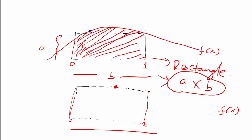Let's understand the theory behind it — it's very simple. There is a function f(x) and we want to integrate it between values 0 and 1, where 0 is the lower limit and 1 is the upper limit. We know that the integration of a function between two values is nothing but the area under that curve.